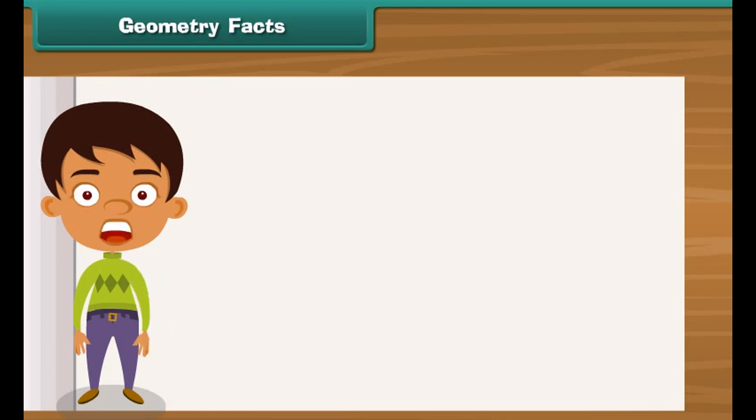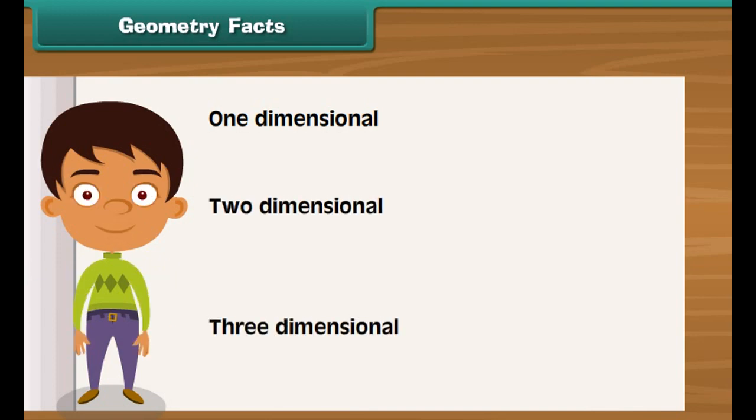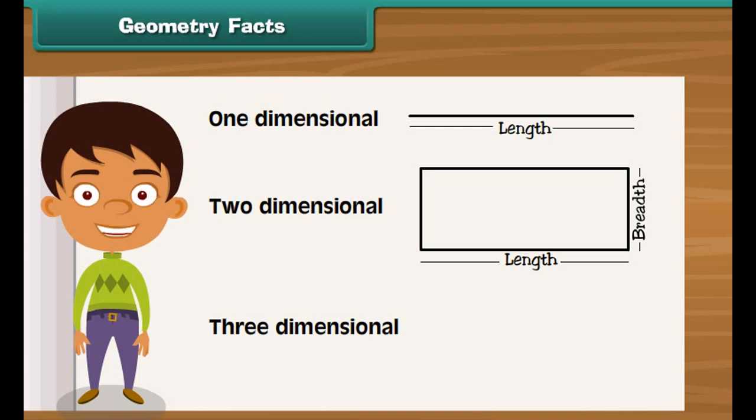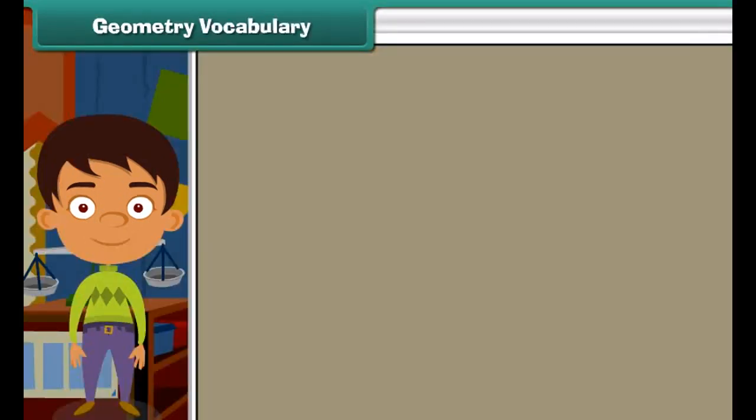Geometry facts. The geometry facts are generally declared in three parts: one-dimensional, two-dimensional, and three-dimensional. The one-dimensional geometry facts is called the line; the lines have only length. The two-dimensional geometry facts is about length and breadth. The three-dimensional geometry facts is about length, breadth, and height.